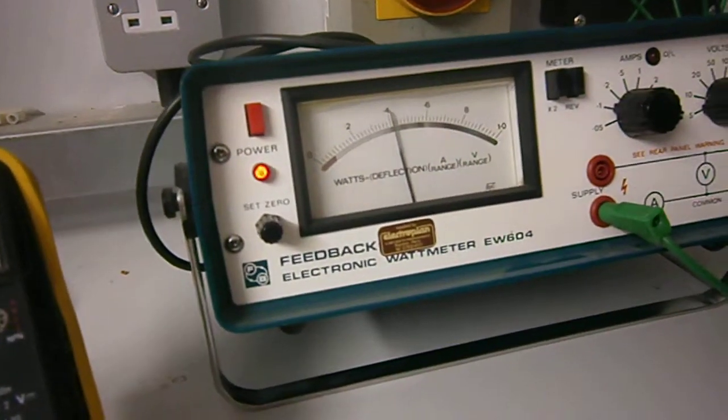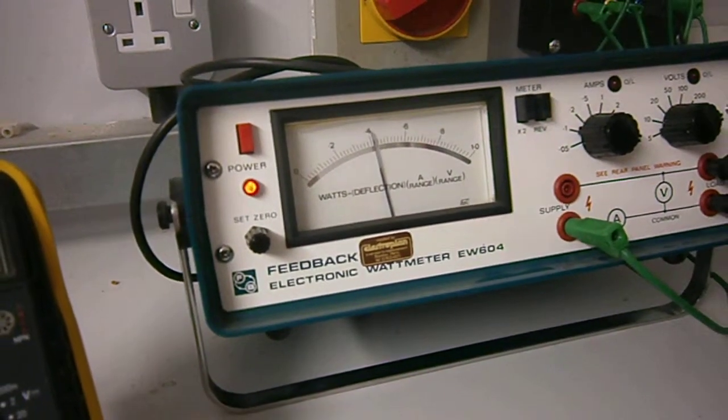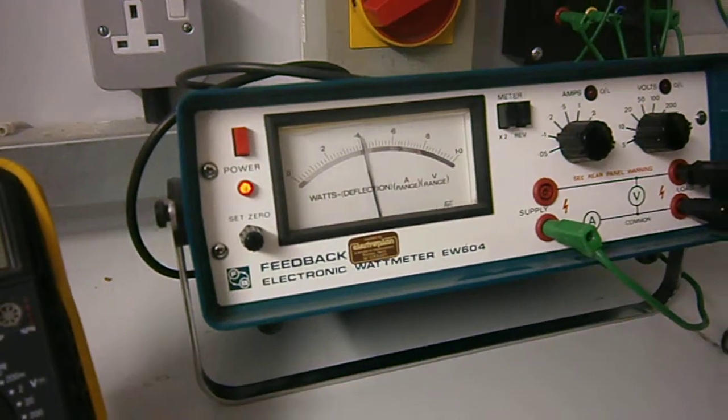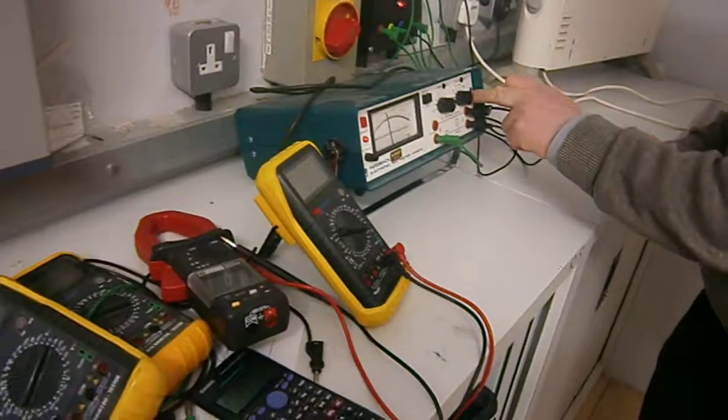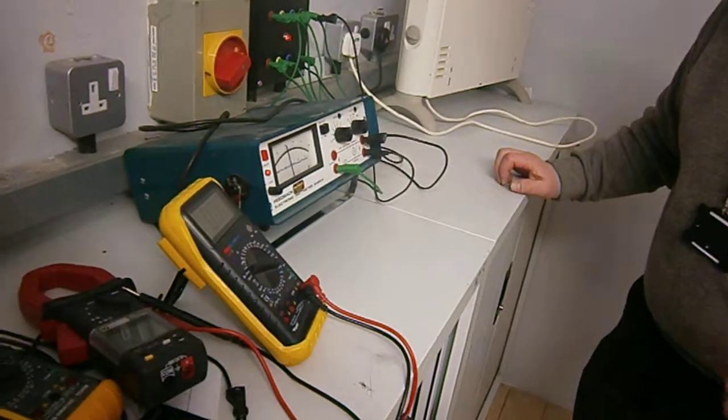Here we can measure pretty much 0.4. It might be a fraction over it. We'll just call it 0.4. We multiply that by 10 and then by 500. That comes out at about just a fraction of 2 kilowatts.